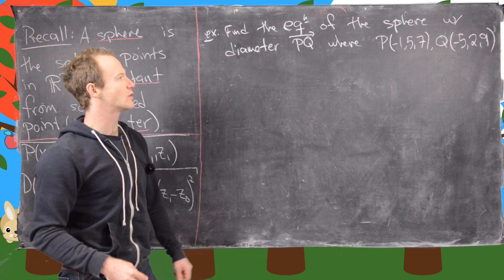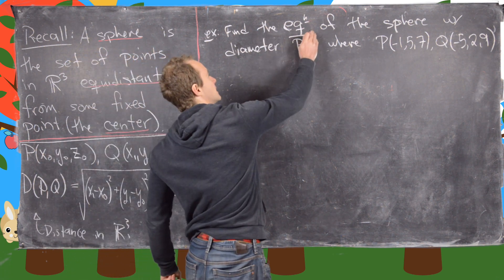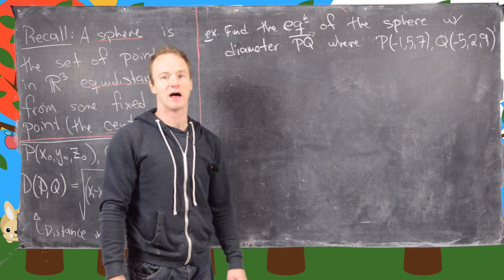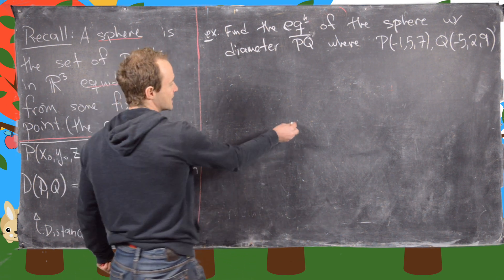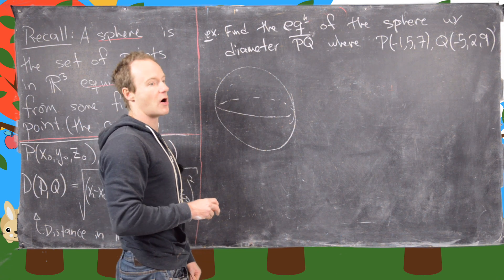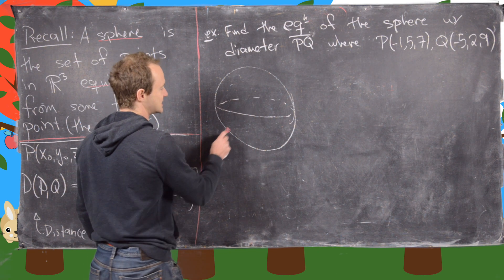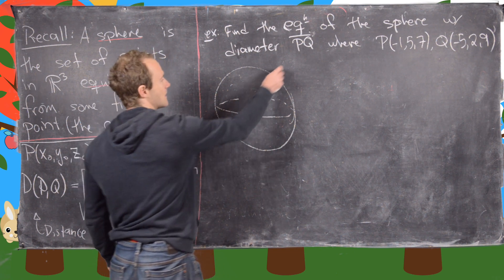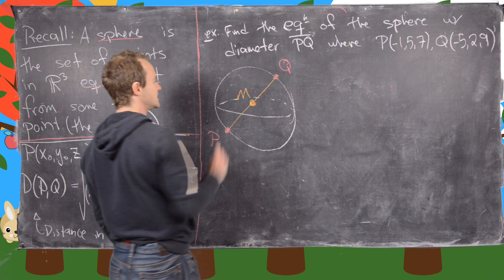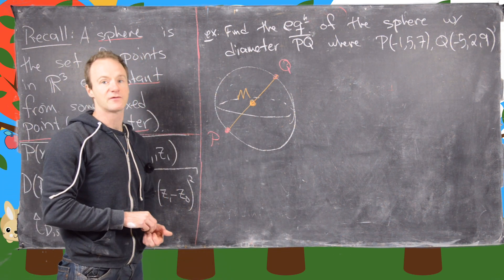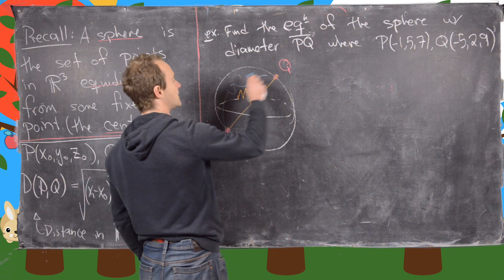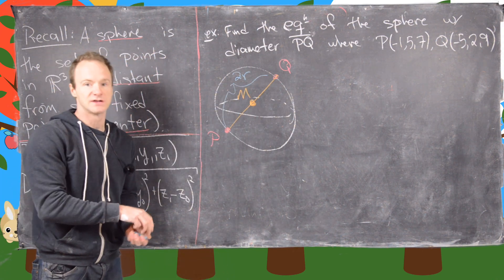For the next example, we'll find the equation of the sphere with diameter PQ, where P = (−1, 5, 7) and Q = (−5, 2, 9). In the sketch, P and Q lie on opposite ends of the sphere, and the diameter must pass through the center. The center is the midpoint of PQ, and the radius is one-half the distance between P and Q.